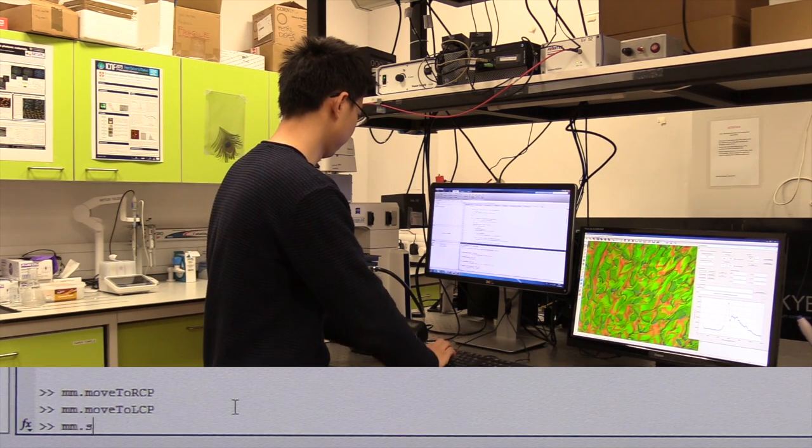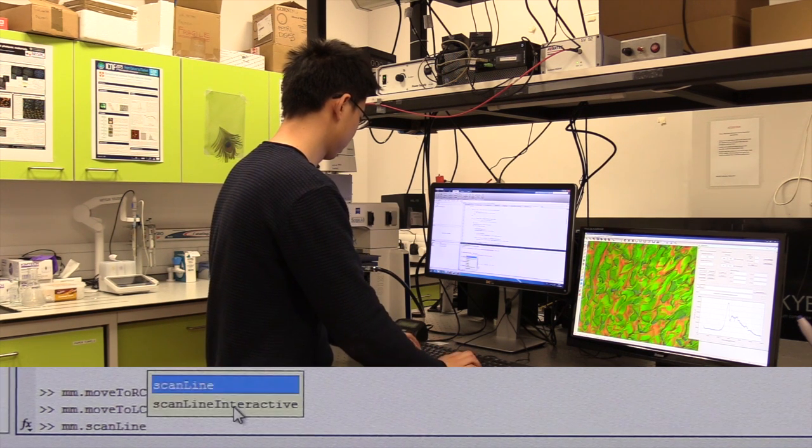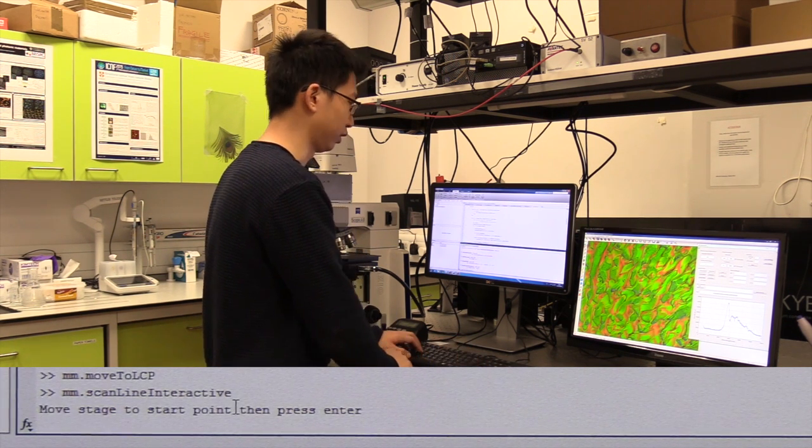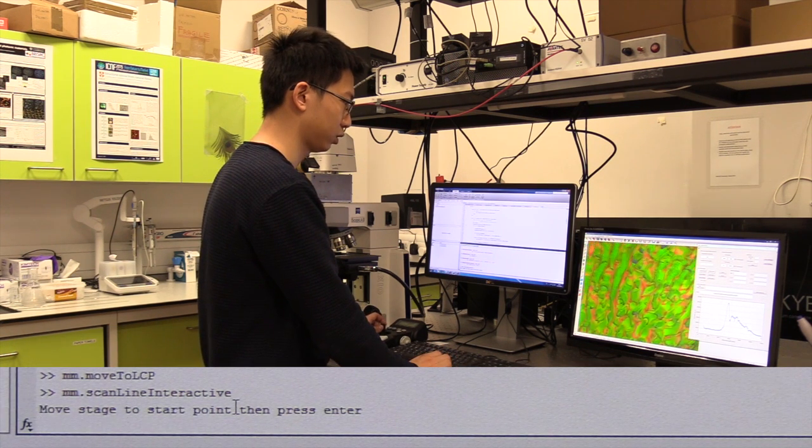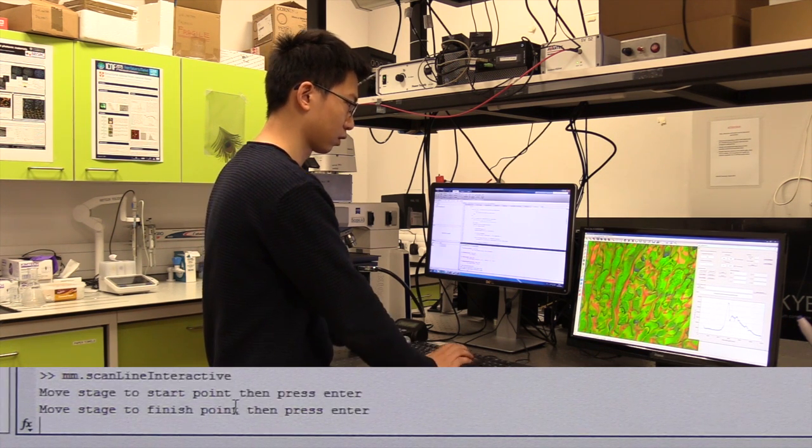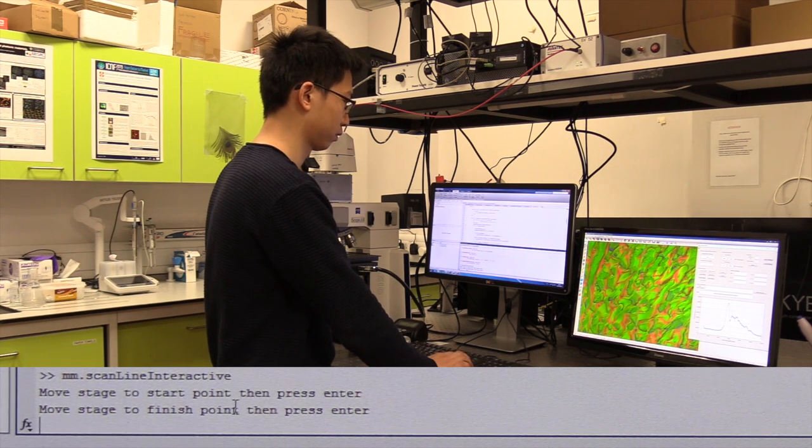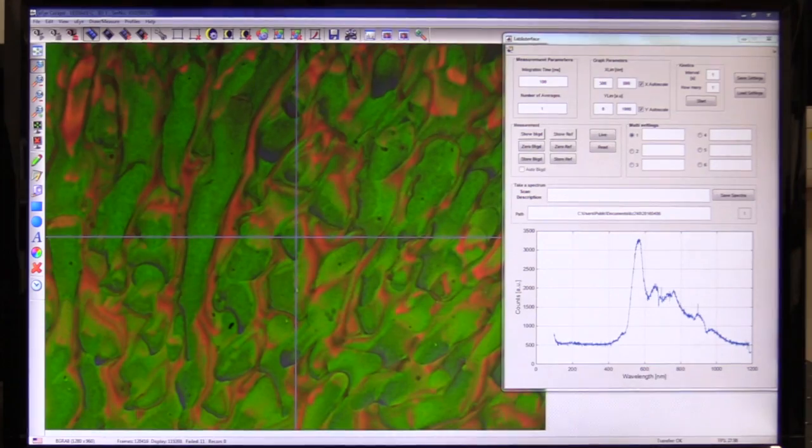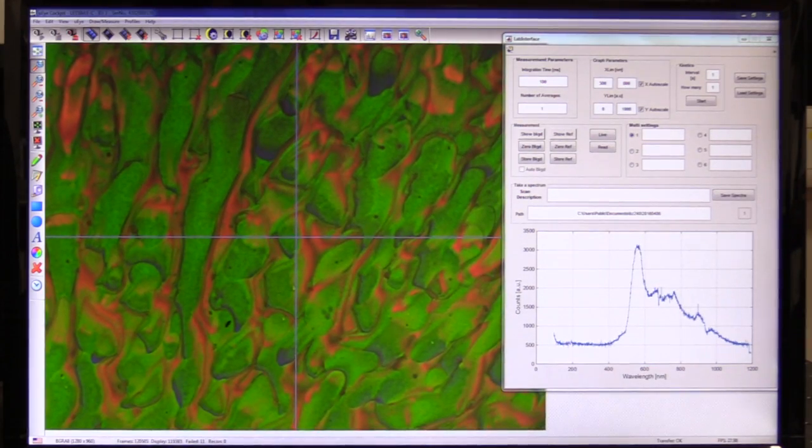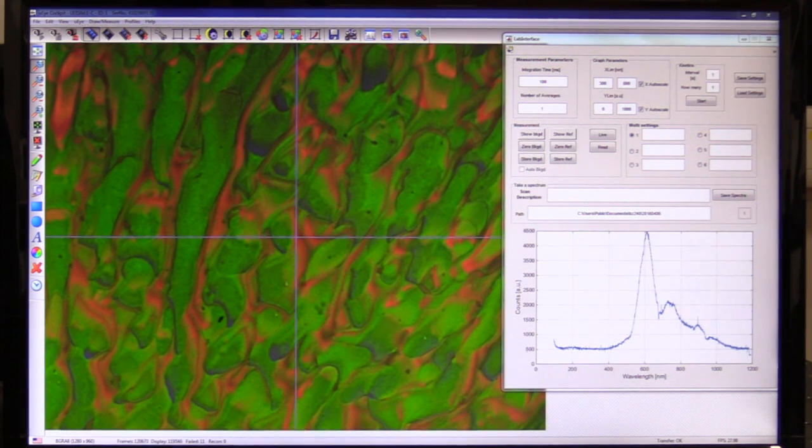To do that, type in scan line interactive, move to the starting point, press enter, and move to the finish point. Now the movement of the stage will allow you to scan from starting point to the finish point.